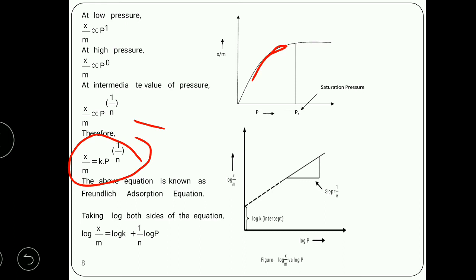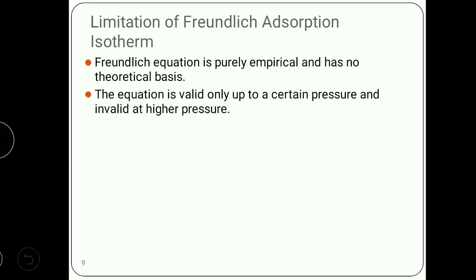To determine the value of the constants, we take log on both sides of this equation, and by plotting this on x and y axes we get the intercept and value of the slope. There are certain limitations of the Freundlich adsorption isotherm: this equation gives qualitative information but does not give quantitative information. This theory has no theoretical basis, and this equation is valid only at certain low pressures; at higher pressure it is invalid.